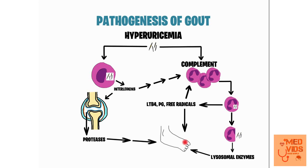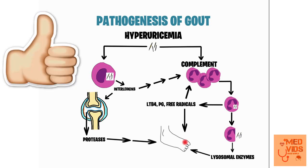The most common site where gout occurs is the first metatarsophalangeal joint.